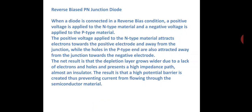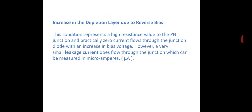In reverse bias condition, a positive voltage is applied to the N-type material and negative voltage is applied to the P-type material. The positive voltage applied to the N-type material attracts electrons toward the positive electrode and away from the junction, while the holes in the P-type are also attracted away from the junction toward the negative electrode. Due to this reverse bias condition, the depletion layer width increases.